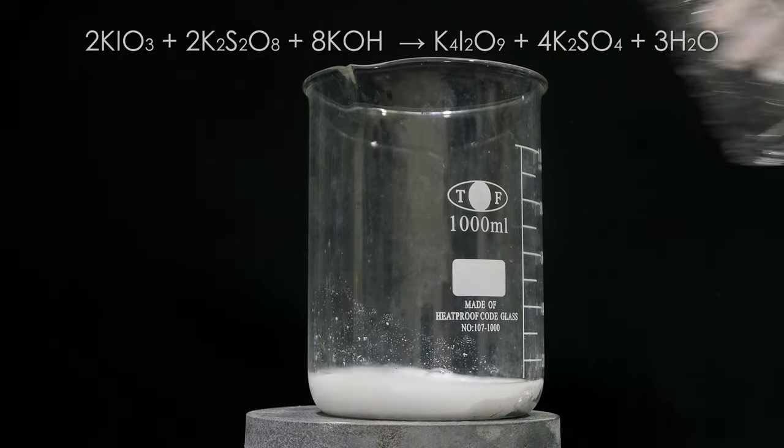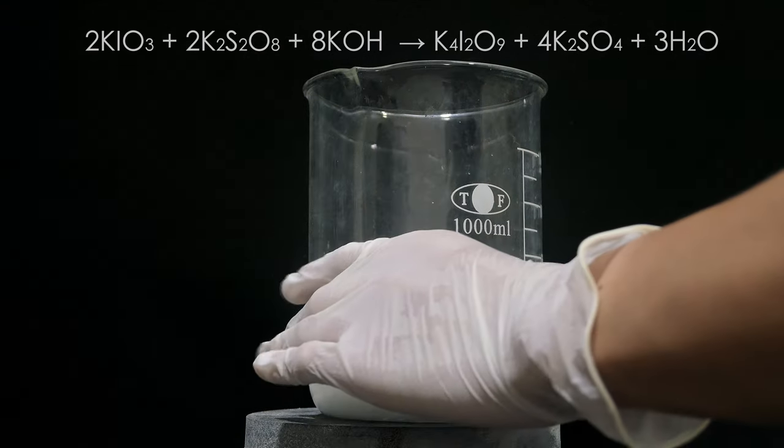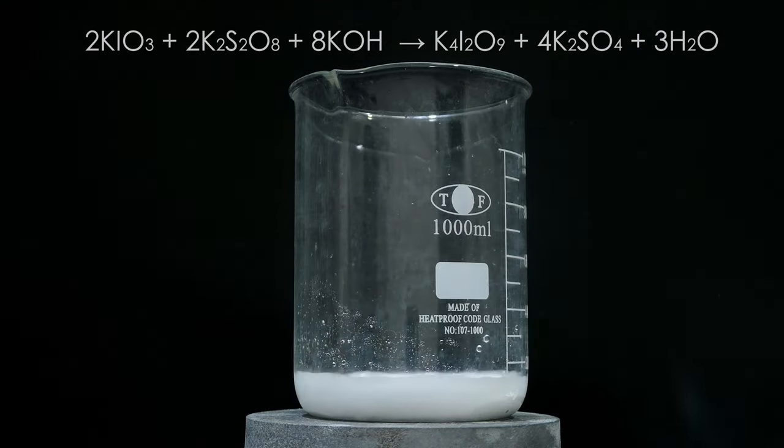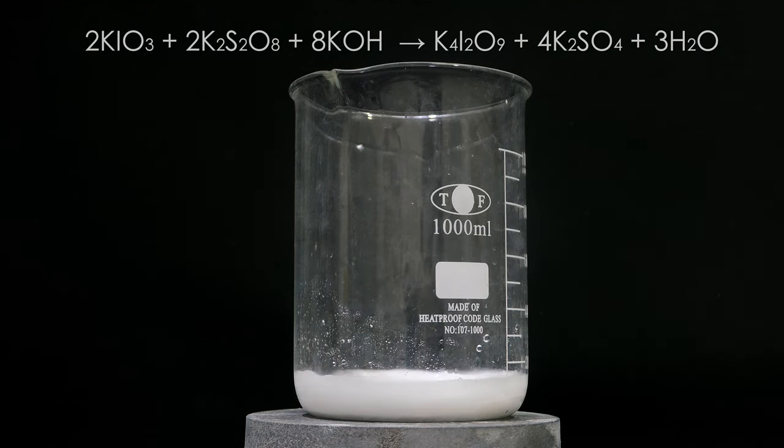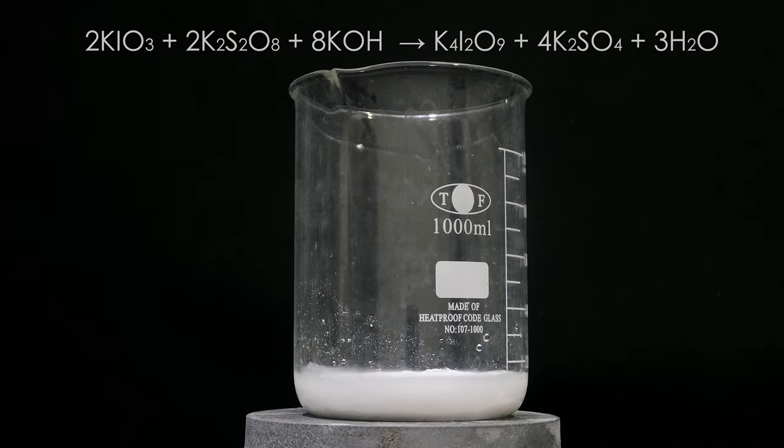The next step is to convert iodate to periodate. Normally this is done by bubbling chlorine gas, but this is not only toxic but also hard to control. So I am taking another approach, using potassium persulfate as the oxidizer. First, 33 grams of potassium iodate is dissolved in about 100ml of water.